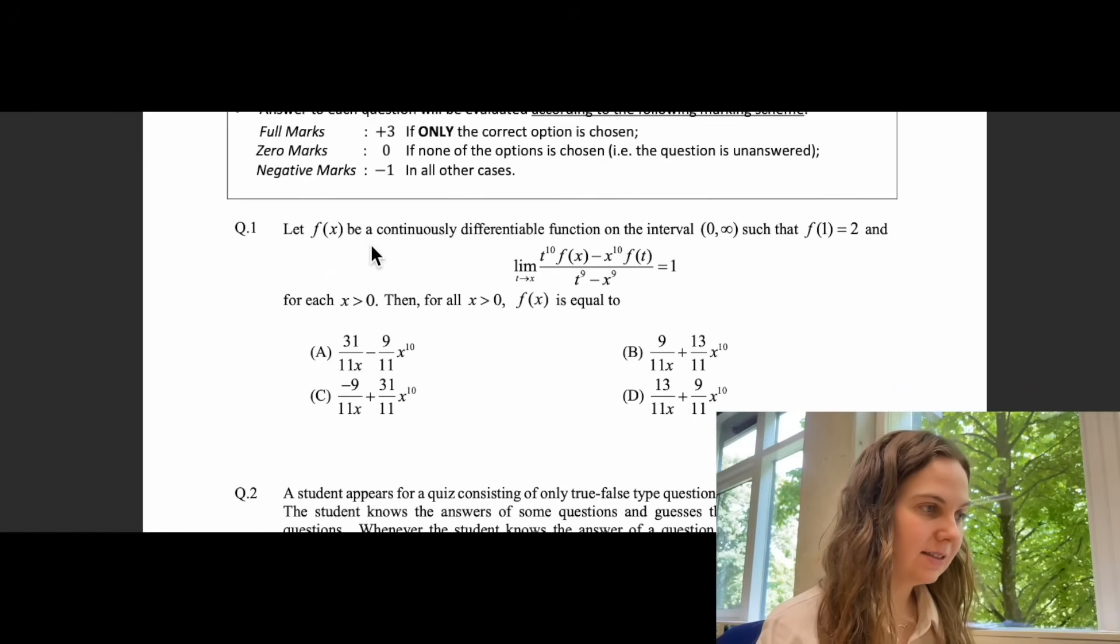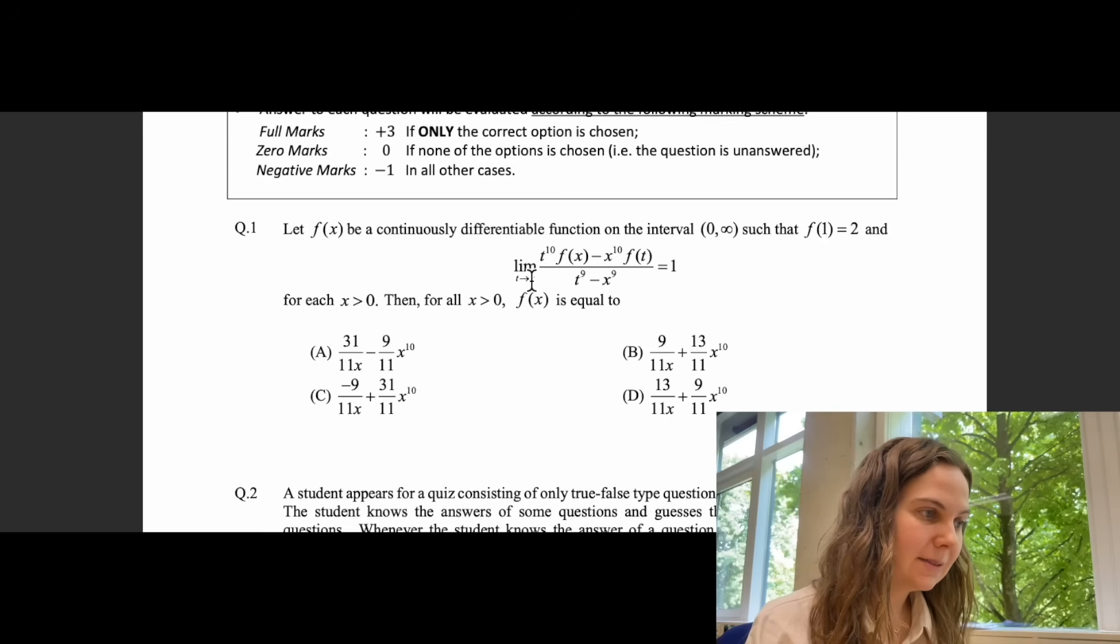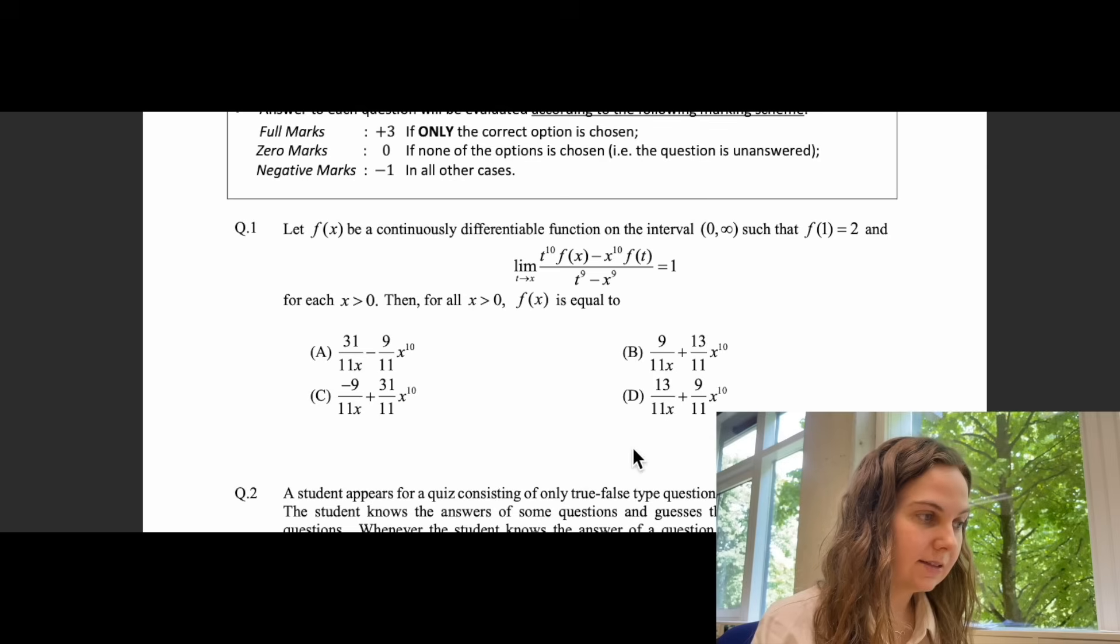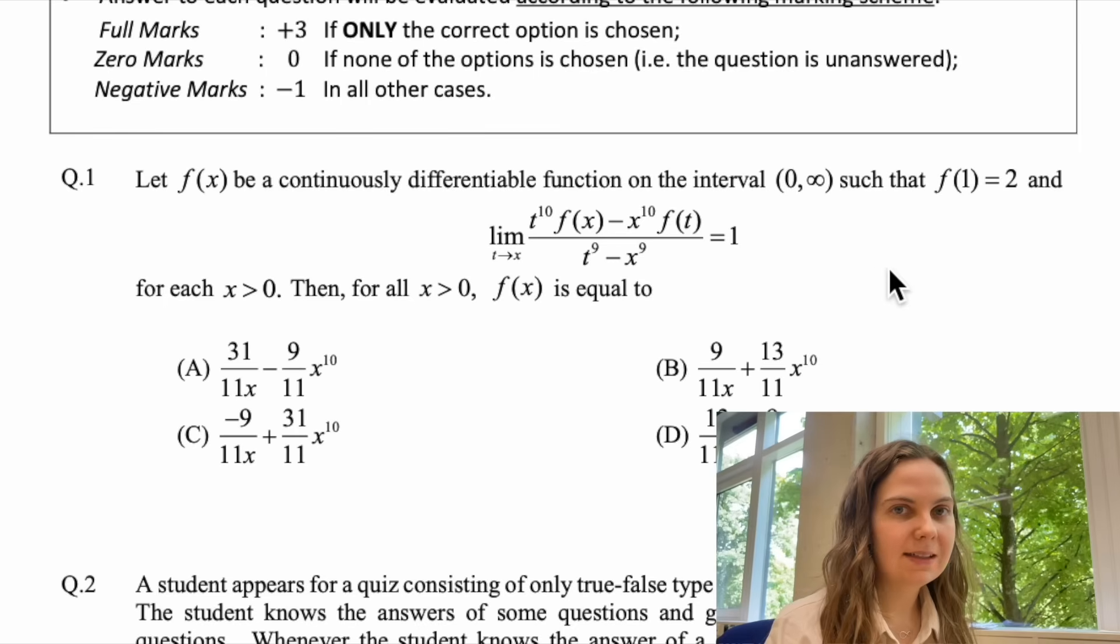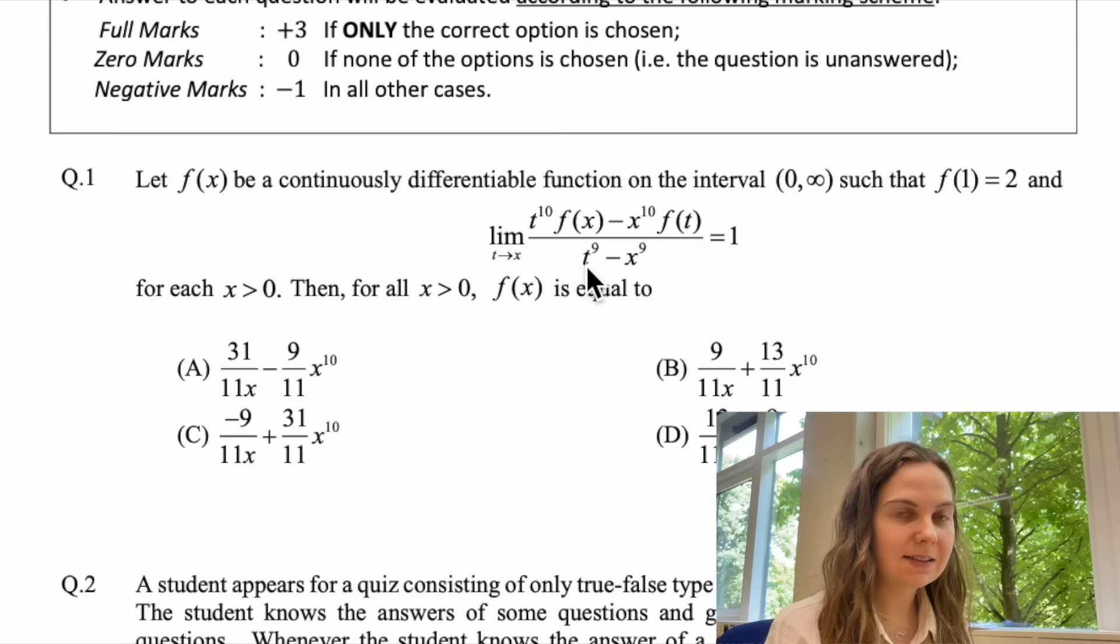Question 1 is the following. Let f(x) be a continuously differentiable function on the interval of 0 to infinity such that f(1) is equal to 2 and let the limit of this expression as t goes to x be equal to 1 for each x greater than 0. Then for all x greater than 0, f(x) is equal to and we are given four different expressions and our task is to determine which of these expressions corresponds to f(x). So if we just look at this expression and we take the limit t going to x we see that we just get 0 divided by 0 which is undefined and doesn't help us.